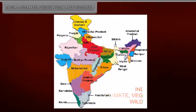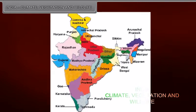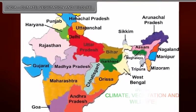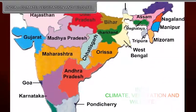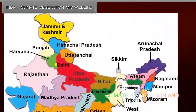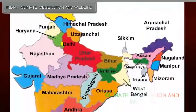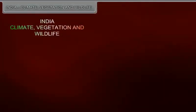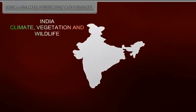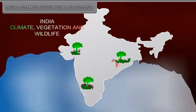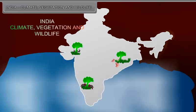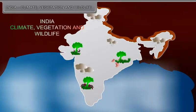India is a large-sized country. It has a variety of relief features. The vast size, varied relief features, latitudinal extent, proximity to the sea, and the direction of monsoon winds are the important factors which affect the climate of India.